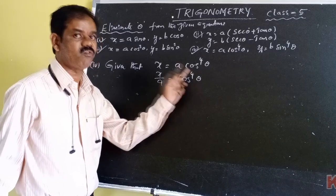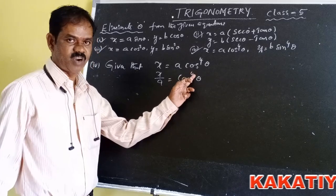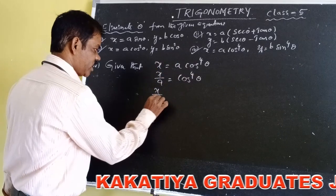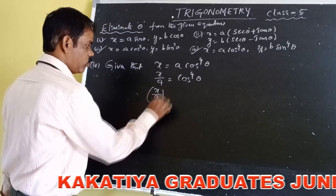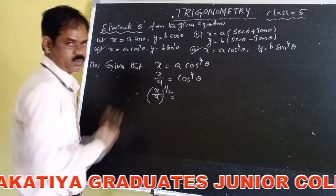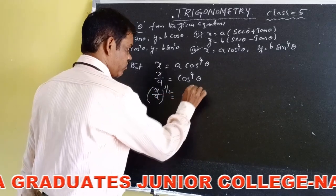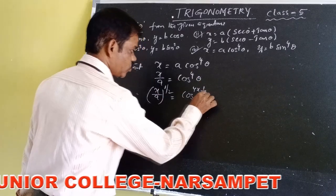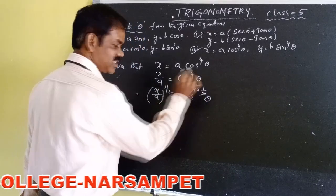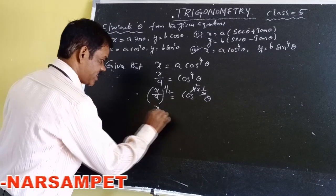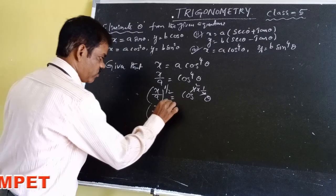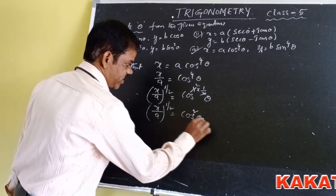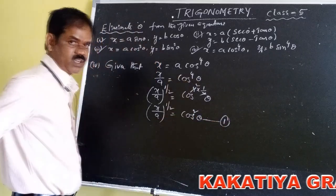Multiplying the power by 1/2 on both sides: (x/a)^(1/2) = cos^(4 × 1/2)θ = cos²θ. Two twos cancel. Therefore, (x/a)^(1/2) = cos²θ. This is equation number 1.